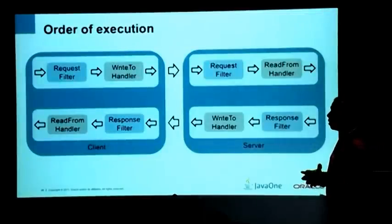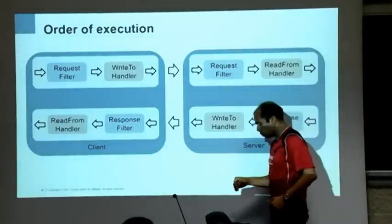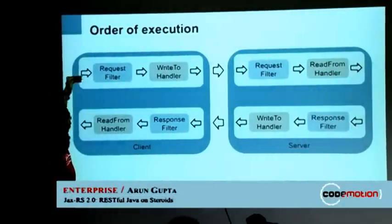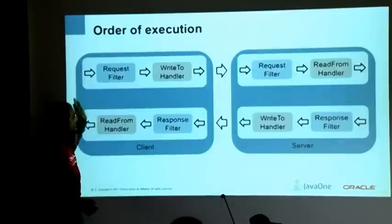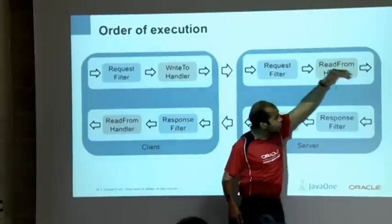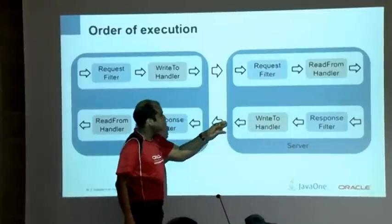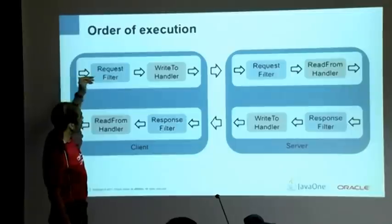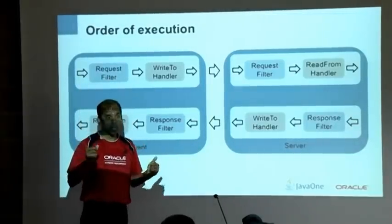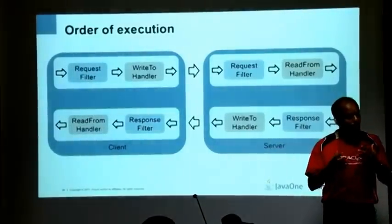With lots of filters and interceptors, it's important to understand their execution sequence. The easiest way to remember: in the order of the request — client sends to server and back. Filters get executed first, then come handlers/interceptors. That's the important thing to understand when programming with these concepts.